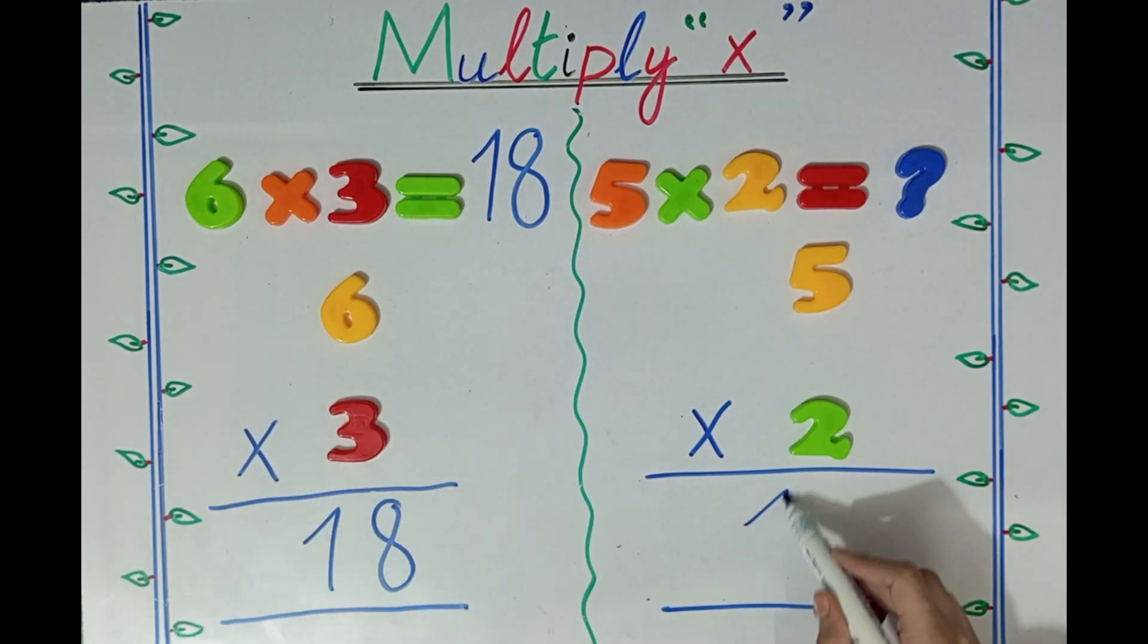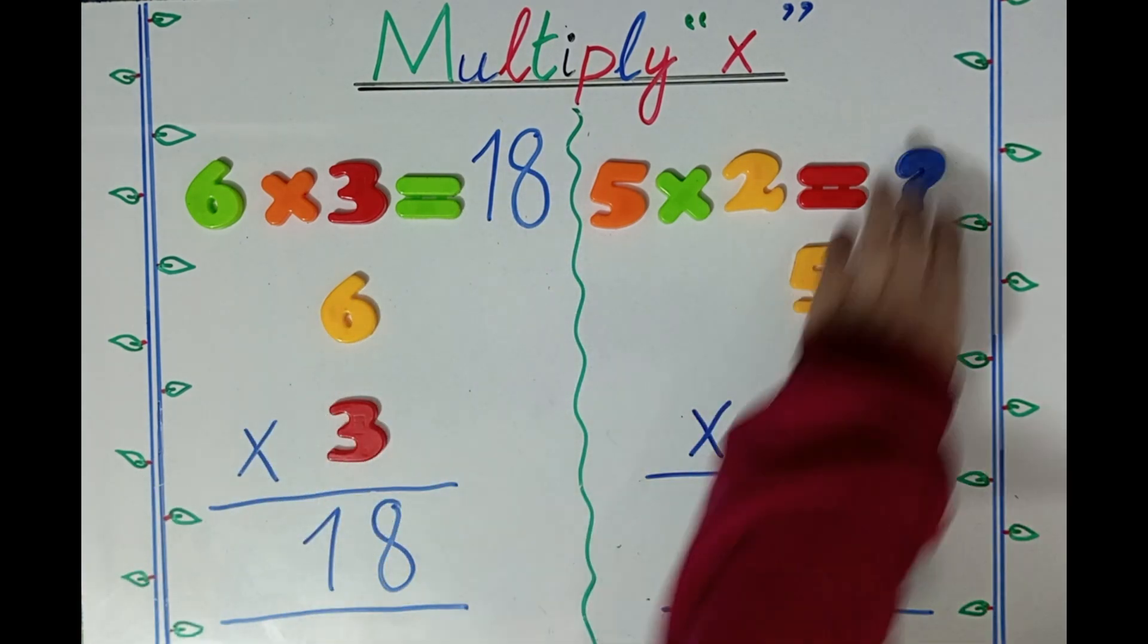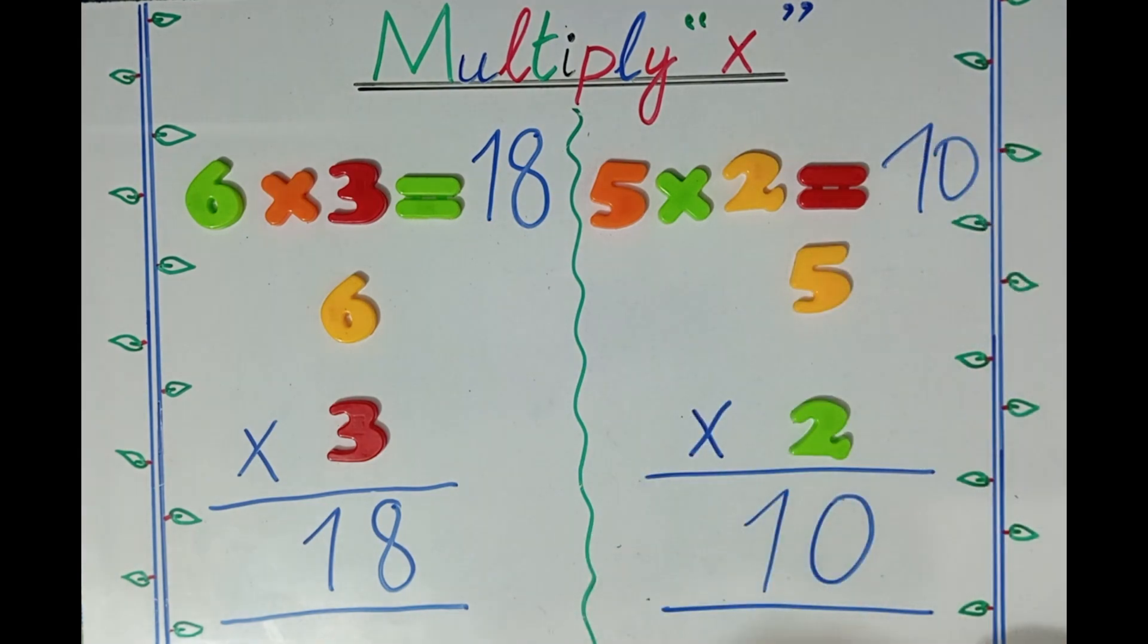5 times 2 equals 10. The answer is 10. Yay!